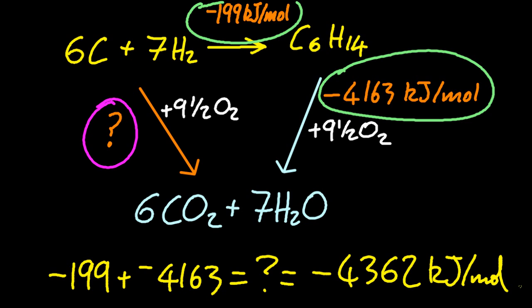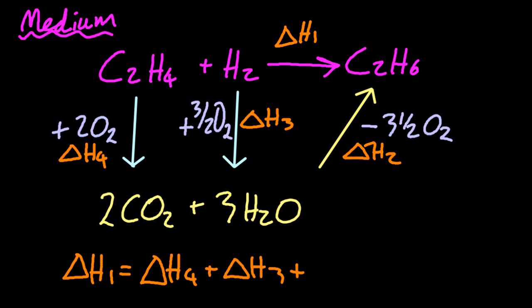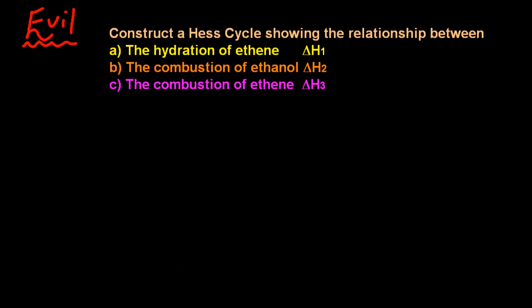Let's try a more tricky looking one. Don't be put off by the parallel arrows there, it's still the same rule. Let me put some delta H's in. Clockwise equals anticlockwise, so one equals four, three, and two.